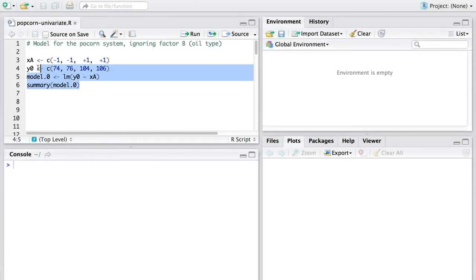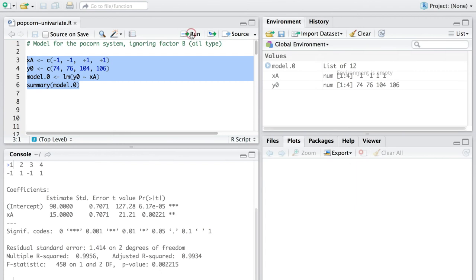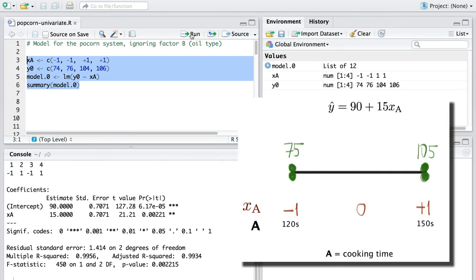Here is the R code. And you will get the exact same result with any statistical software. Just a brief recap on the interpretation of the 15 times XA term in the model. That says, when we increase the cooking time from minus 1 to 0, or from 0 to plus 1, in coded units, in other words, a 1 unit increase, then the number of popped but unburned popcorn increases on average by a value of 15.